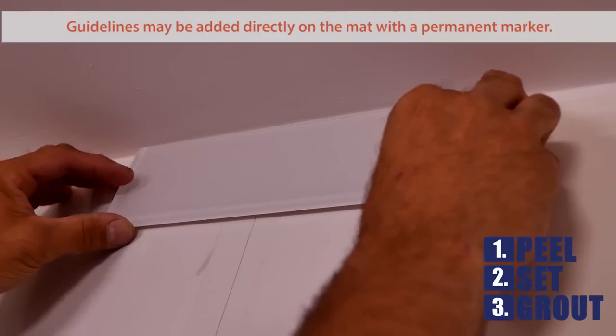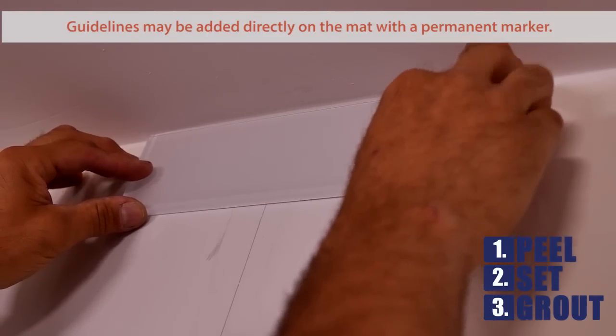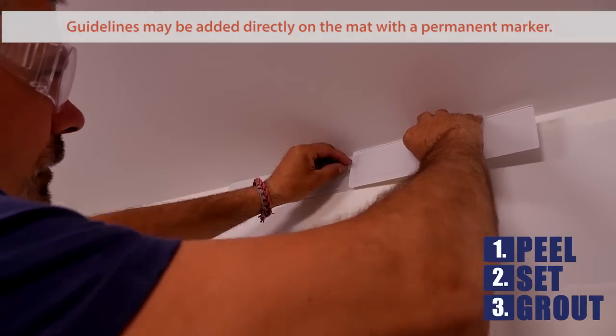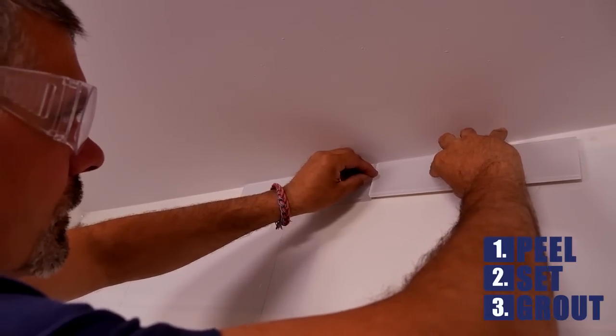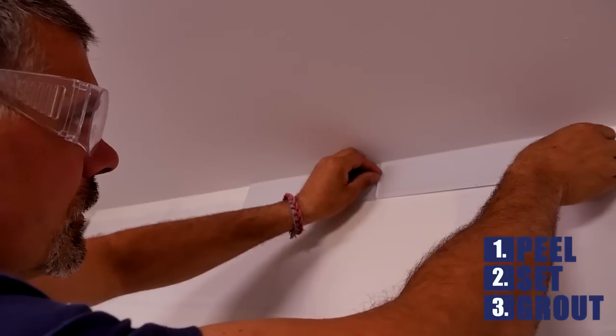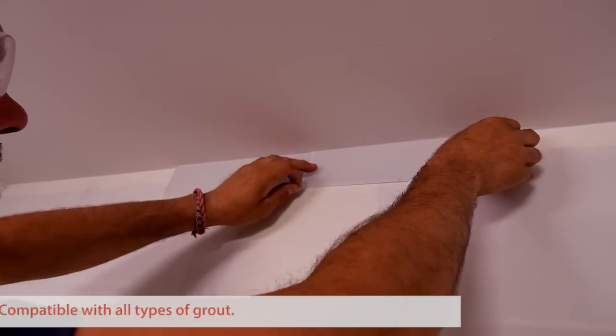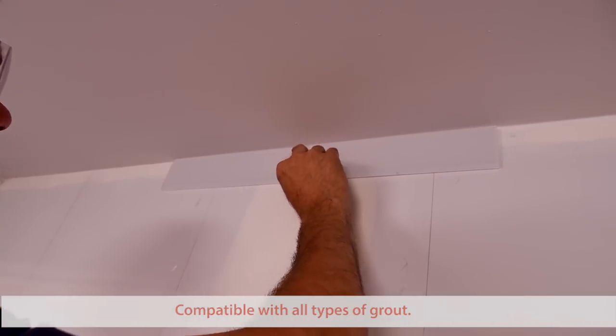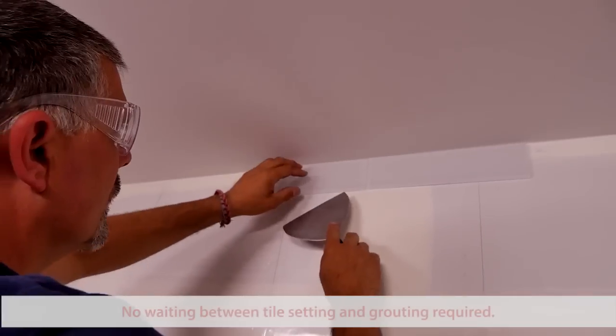Now you're ready to set your tile. Align initial tiles to guide lines and apply a light press to hold them in place. Apply additional tiles using tile spacers. The light press allows the tile to be repositioned by prying off with your fingertips or putty knife.